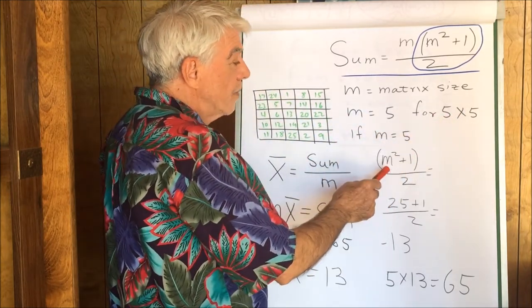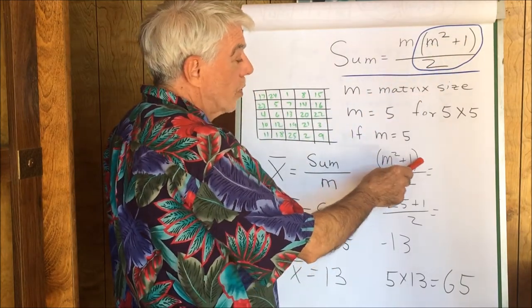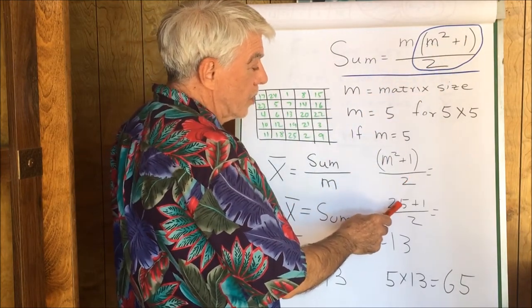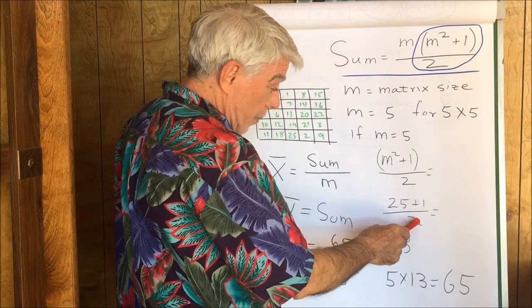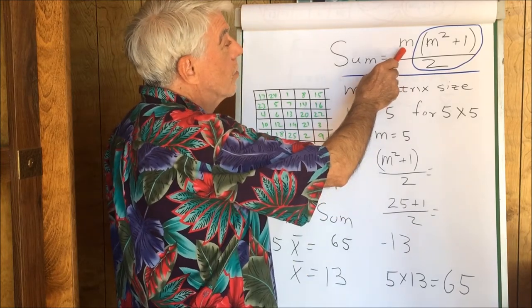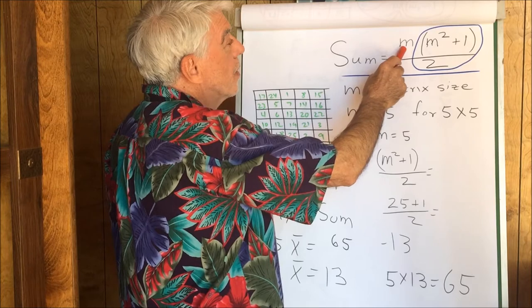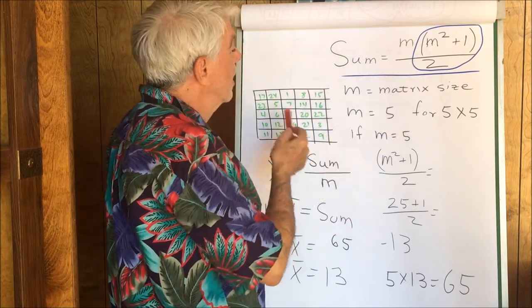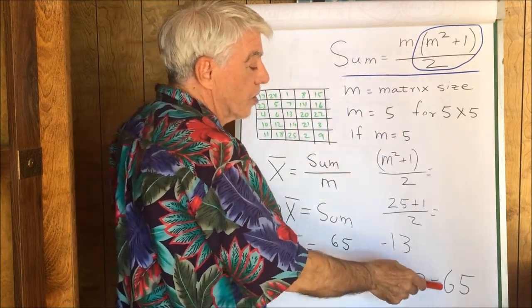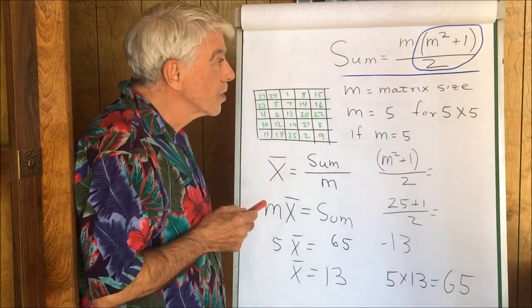When M is 5, this term of the equation, M squared plus 1 divided by 2, is the same as 25 plus 1 divided by 2, gives us 13. And then that term is multiplied by M, the matrix size, which we said was 5. 5 times 13 gives us 65, which you may recall is what we got when we did some sums.